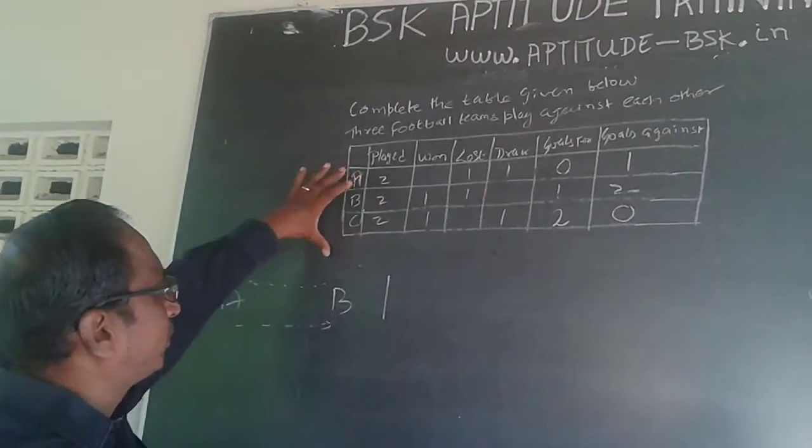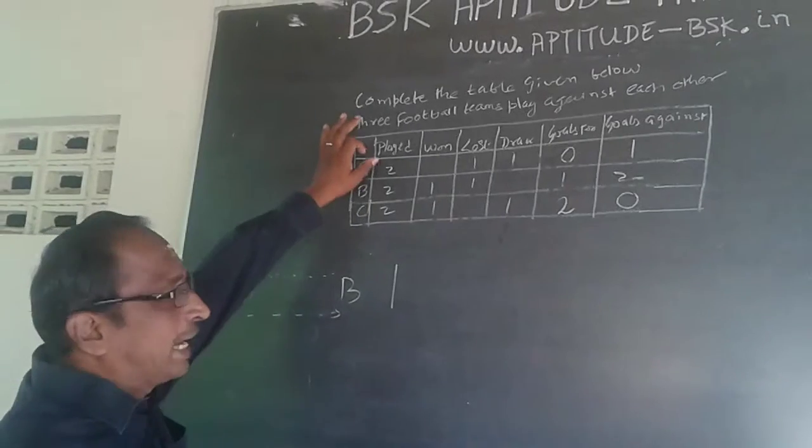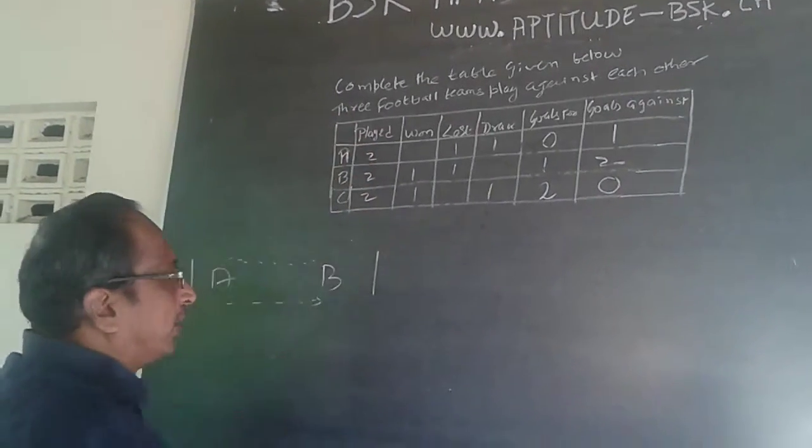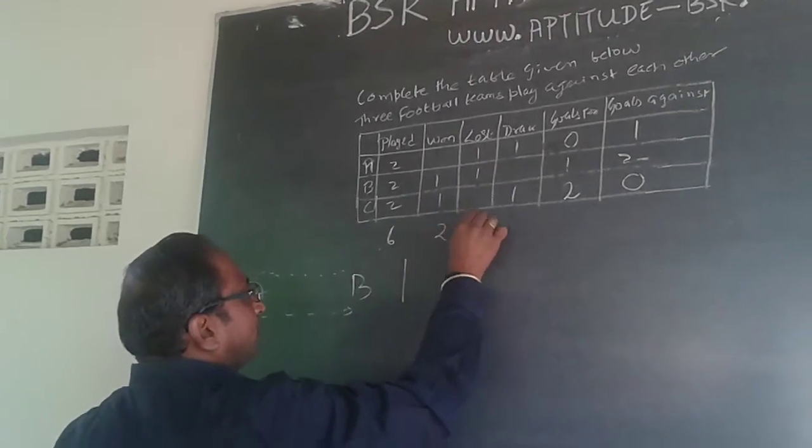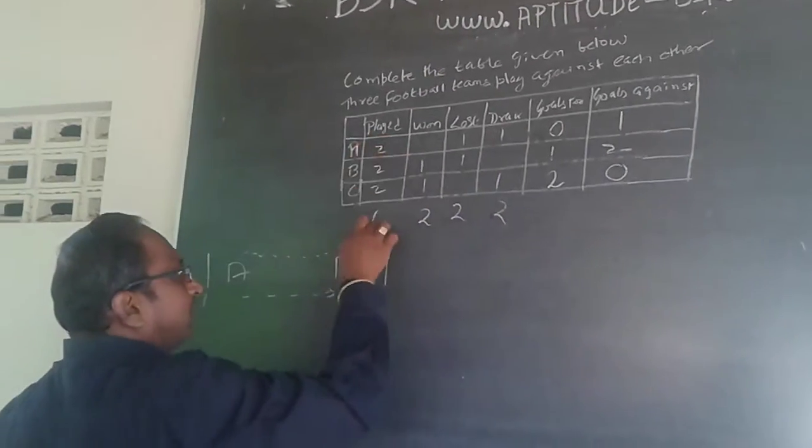This is the filling of the table. One more counter-check you can do is see the game split total. The total of wins, losses, and draws should equal six because the total number of games played is six.